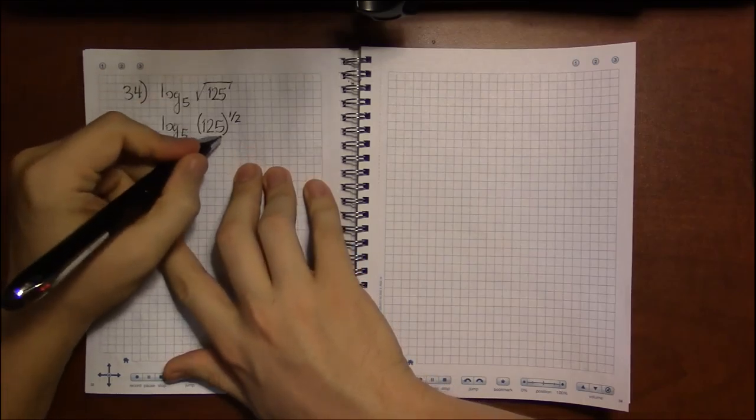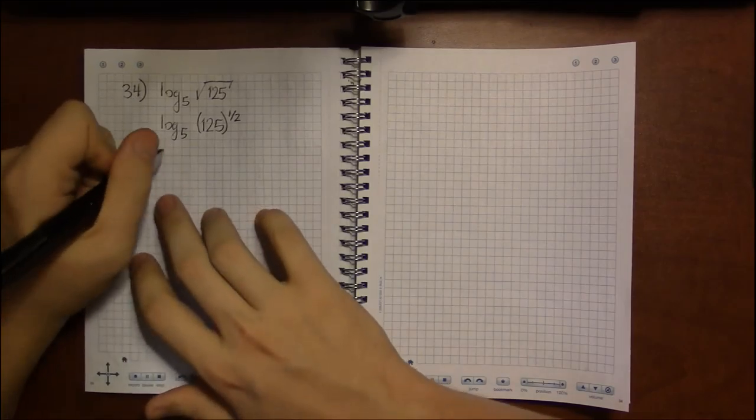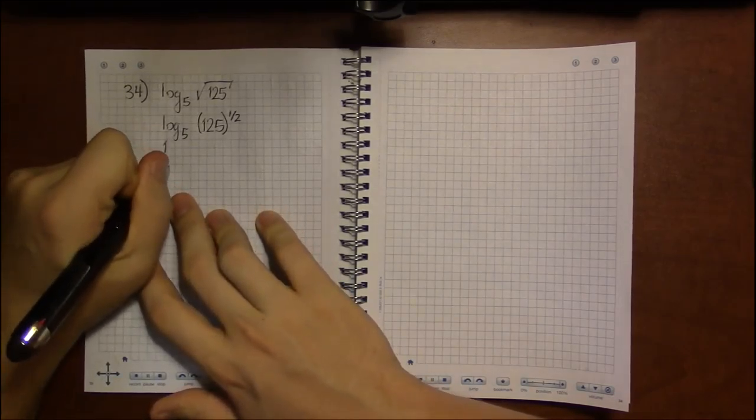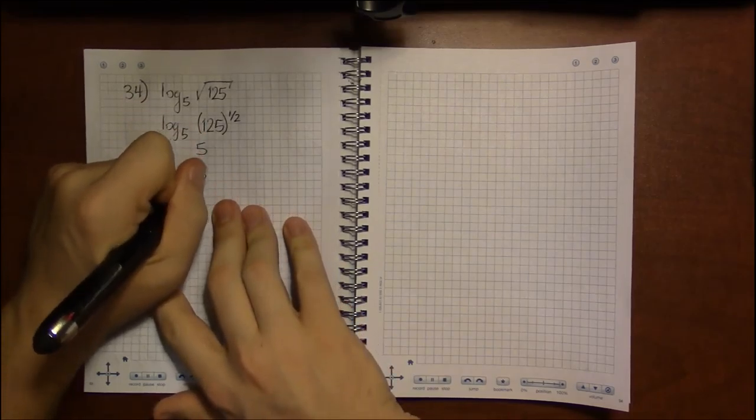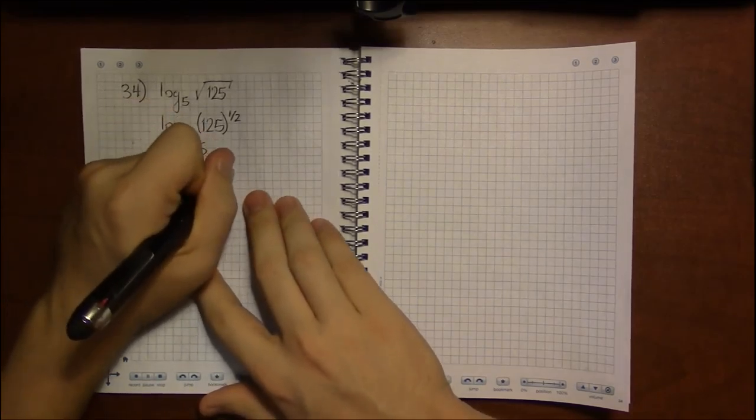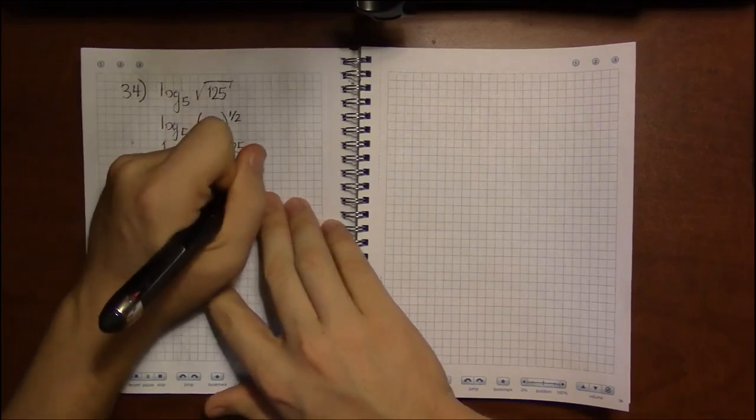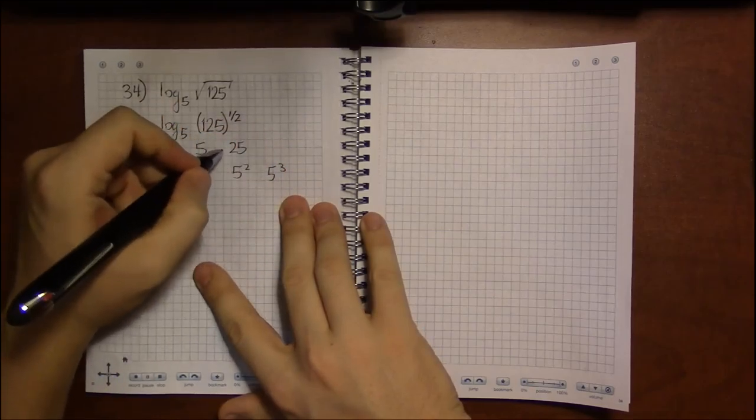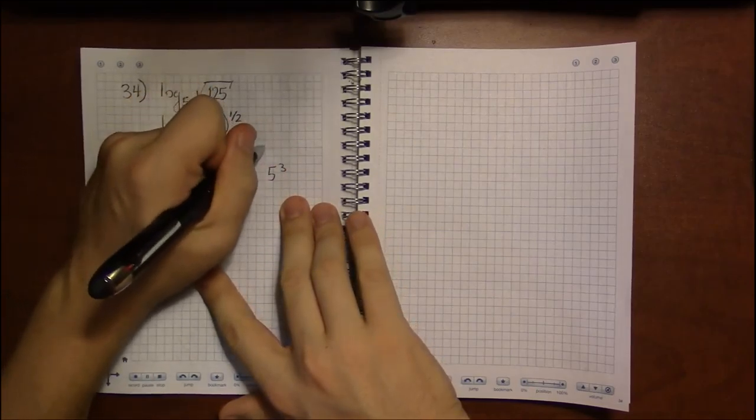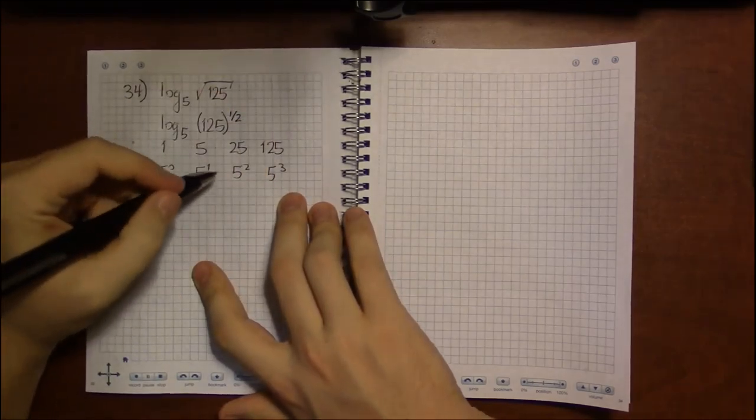But I still need to write 125 as a power of 5. So let's see. 5 to the 0 is 1. 5 to the 1st is 5. 5 squared is 25. What about 5 cubed? 5 cubed, 25 times 5, that's 20 times 5, which is 100. And then 5 times 5 is 25, so this is 125. Nice.